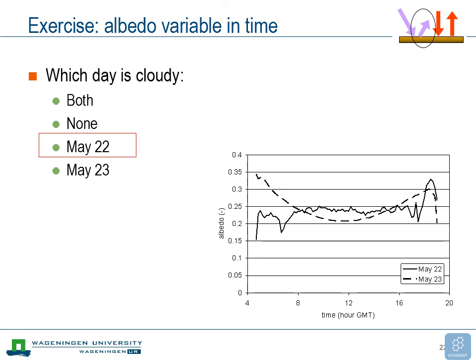The answer is that May 22 is the cloudy day. On a cloudy day you have mostly diffuse radiation, so the directional composition of the radiation does not vary during the day — radiation always comes from all directions. Whereas on a sunny day, radiation close to sunrise and sunset comes from near the horizon, and during midday it comes from higher in the sky. So the directional composition varies during the day, and as a result the albedo also varies during the day.